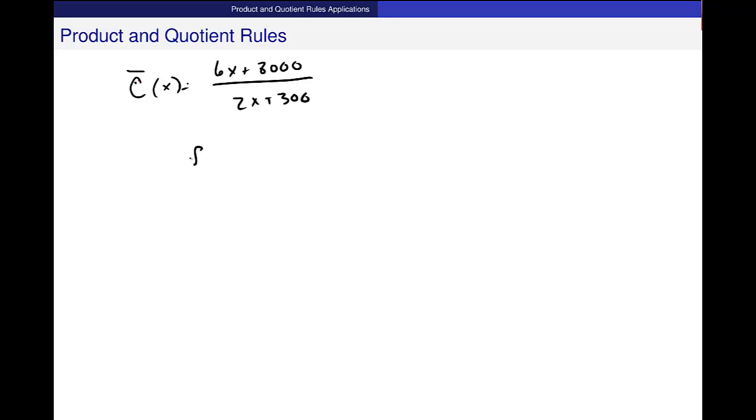So f of x is this 6x plus 8,000. f prime is 6. g of x, the denominator, is 2x plus 300.